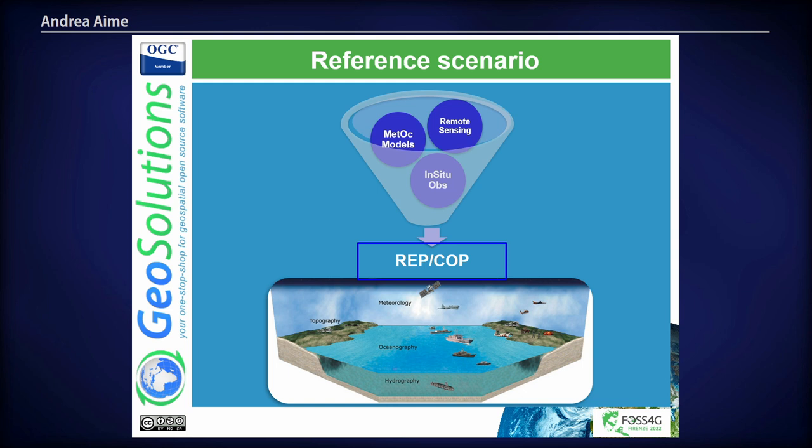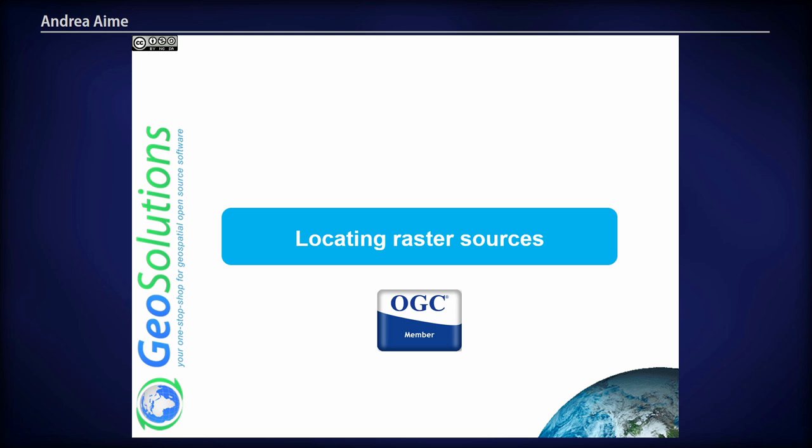The use case is: let's say you have a lot of satellite imagery, drone data, and remote sensing in general, and you want to distribute it through your platform using GeoServer. How do you go about it? Well, typically the first step when you have a ton of data is finding the data that you want — so search.